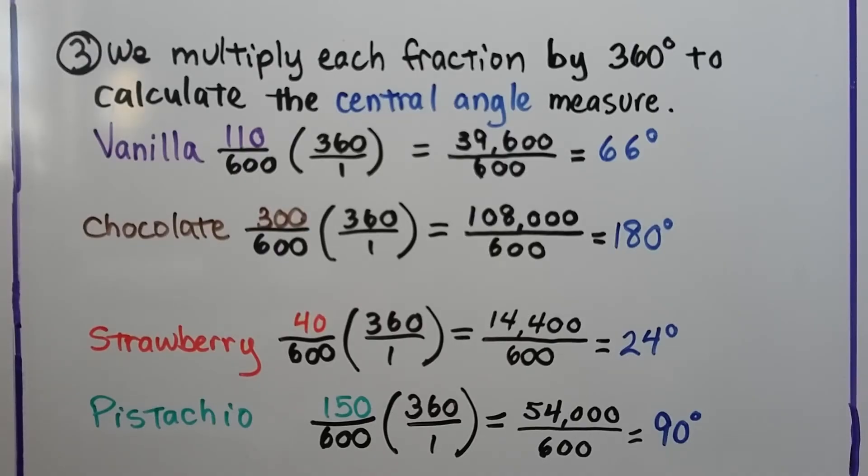Now we multiply each fraction by 360 degrees to calculate the central angle measure. Because a circle is 360 degrees, isn't it?